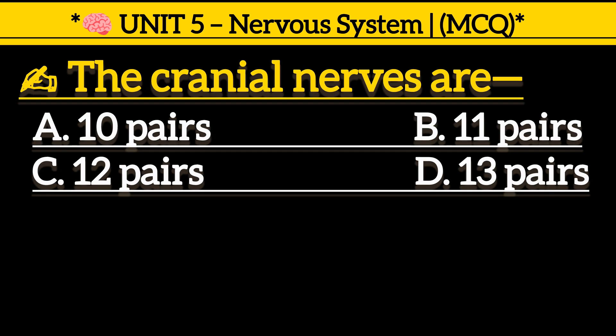The cranial nerves are: Option A, 10 pairs. Option B, 11 pairs. Option C, 12 pairs. Option D, 13 pairs.